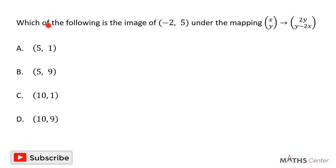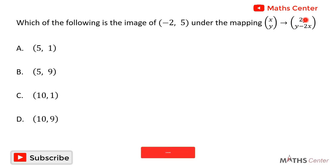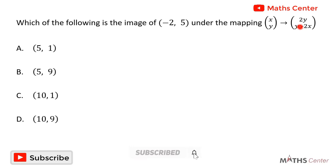Which of the following is the image of the point (−2, 5) under the mapping where (x, y) maps to (2y, y − 2x)?